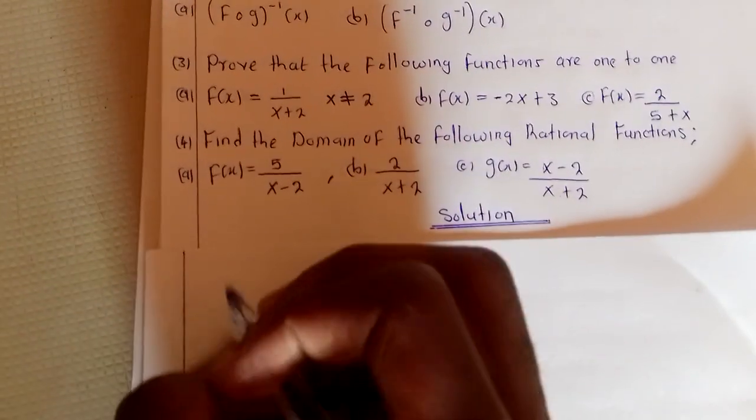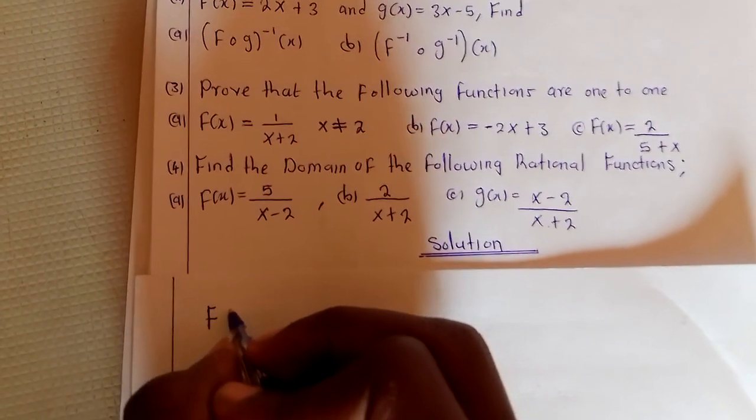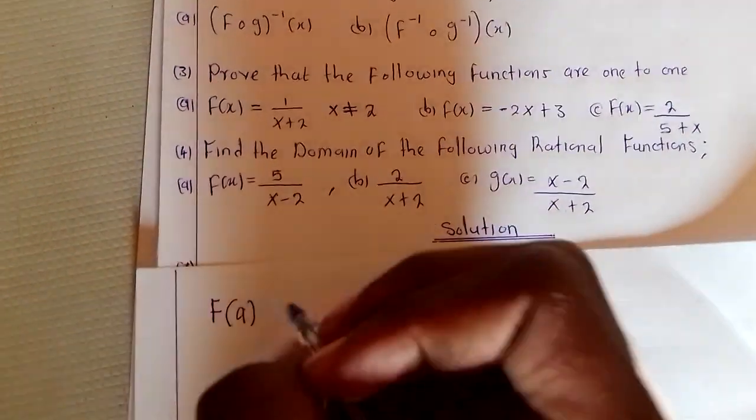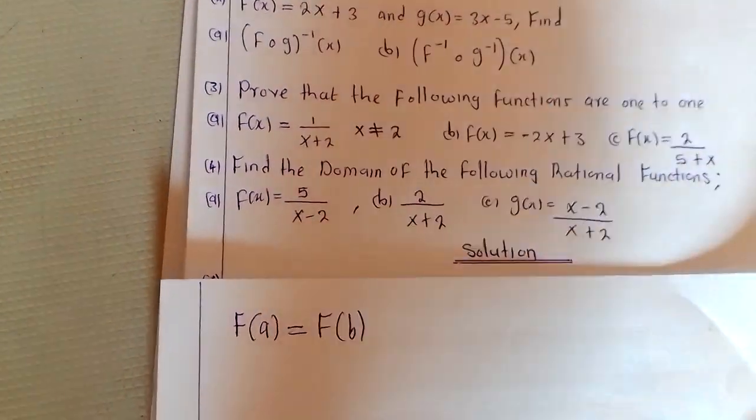Alright, so for a function to be one-to-one, the concept is that some function of A input must equal the function of B input, like this.